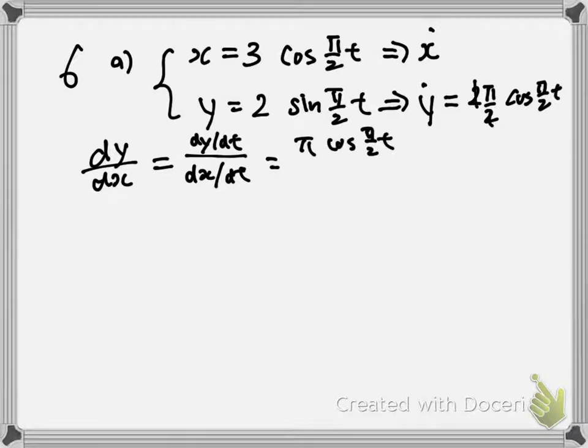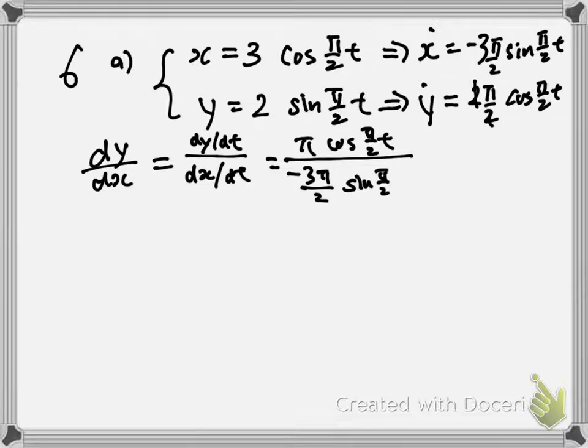And then dx/dt is negative 3 sine of π/2t. Again, you need to multiply by π/2 thanks to chain rule. So on the bottom, you will have negative 3π/2 sine of π/2t.